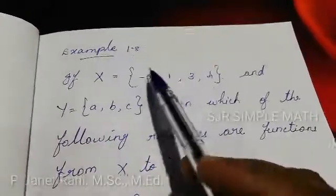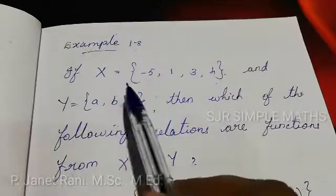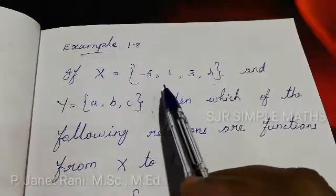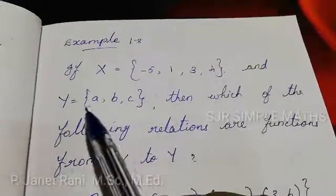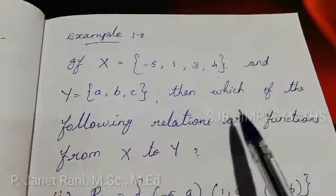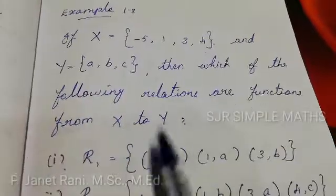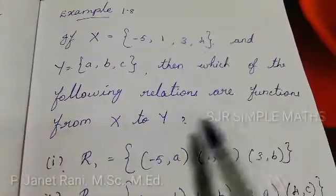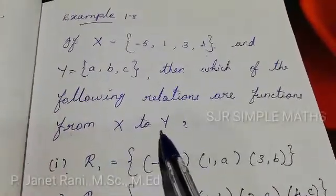Example 1.8: If X is equal to {-5, 1, 3, 4} and Y is equal to {a, b, c}, then which of the following relations are functions from X to Y?